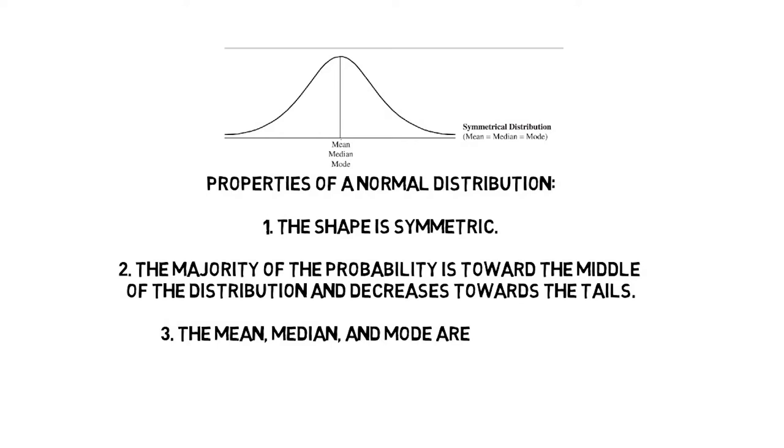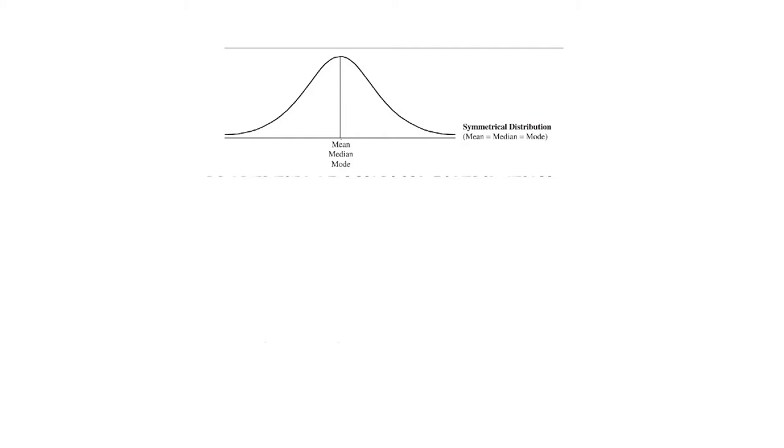1. The shape is symmetric, such that the left side is a mirror image of the right side. 2. The majority of the probability is towards the middle of the distribution and decreases as we move into the left and right tails of the distribution. And 3. The mean, median, and mode are all the same, and we can find them directly in the center of the distribution.